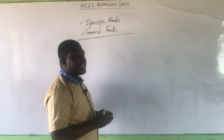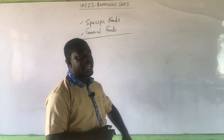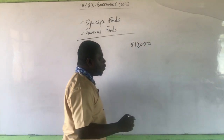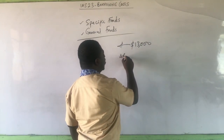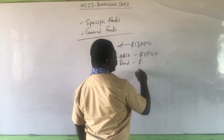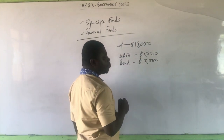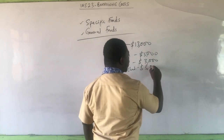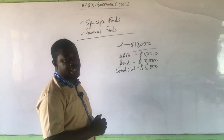There could be multi-source borrowings — even in the case of specific funds. For example, we wanted to borrow $13,000 for the construction of a qualifying asset but couldn't secure it all from one source. So we went to AFSA Bank and secured $5,000, then issued bonds which raised $3,000, and the extra $5,000 was secured from Standard Chartered Bank. This $13,000 breakdown is what we are going to borrow specifically for the construction of the qualifying asset.